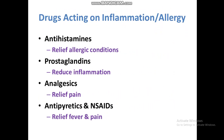Drugs acting on inflammation and allergy. There are different drugs used as anti-inflammatory agents. Antihistamines are used to relieve allergic conditions and reduce the production of histamine. Prostaglandins, like leukotrienes and other related compounds, reduce inflammation. Analgesics are used to relieve pain and are also called painkillers.